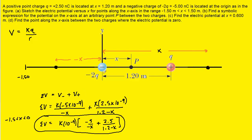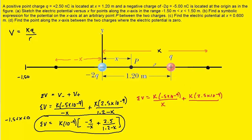Now we need an equation for x values between 0 and 1.2. The total potential in that region is again the sum of the two electric potentials: k times the negative charge divided by the distance from that charge to any point between 0 and 1.2 — marked as point P with distance x — plus k times the positive charge divided by the distance from the positive charge to this point, which is 1.2 minus x.